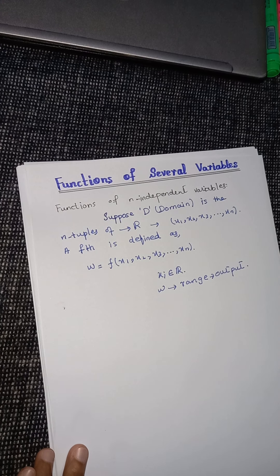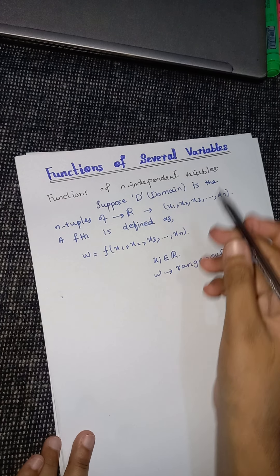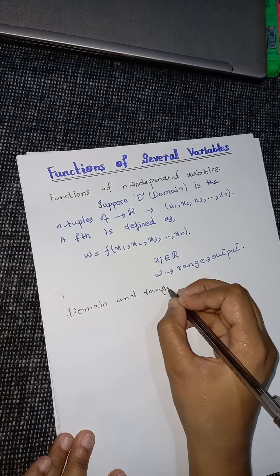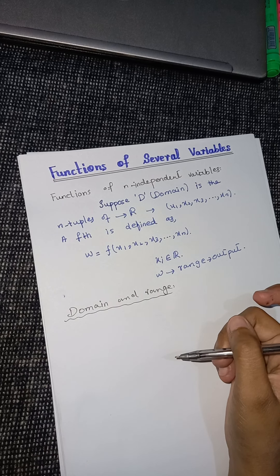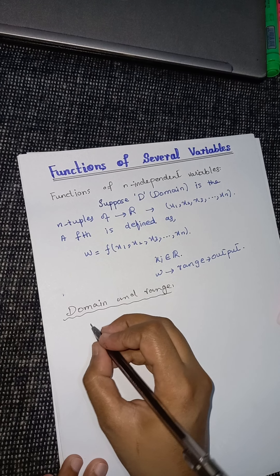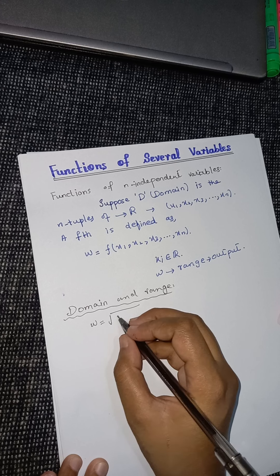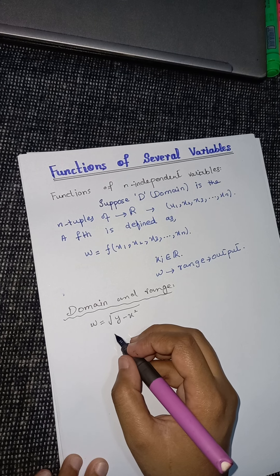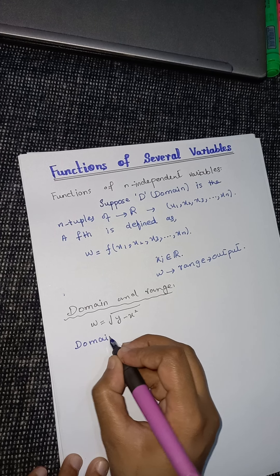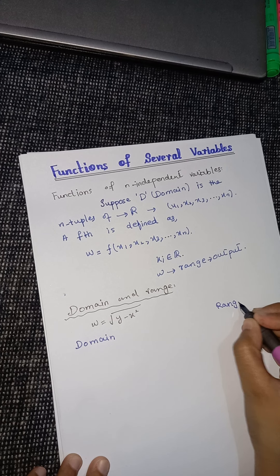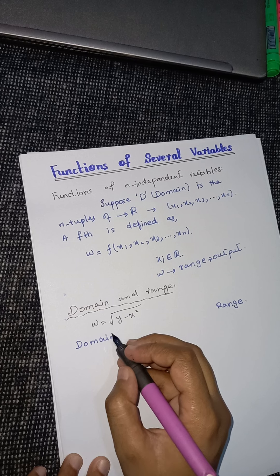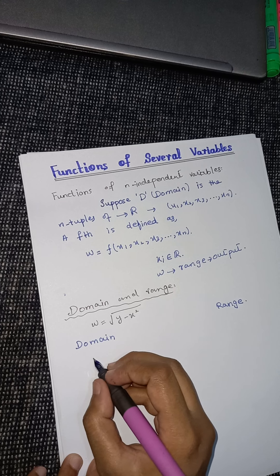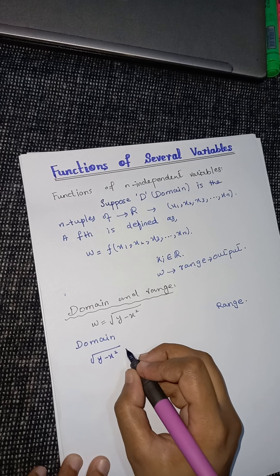Now let's come to the domain and range of functions of several variables. If we talk about the function w = √(y − x²) and we have to find its domain and range, first of all we will find its domain. For finding the domain, this function must be greater than or equal to 0, so we set y − x² ≥ 0.